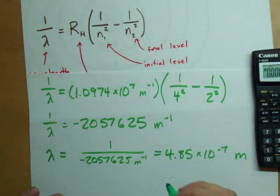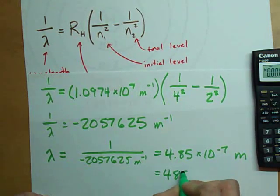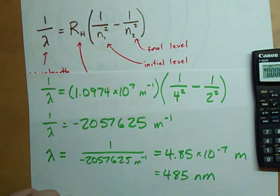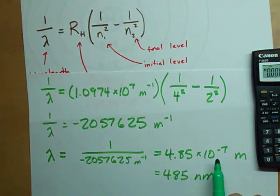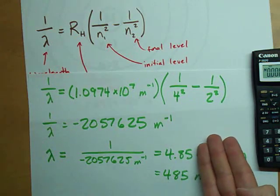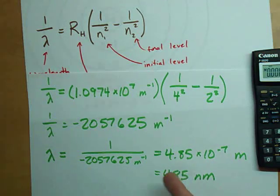This is 485 nanometers. I know that because I know that in these kind of questions I'm going to get 10 to the minus 7 a lot. And when I have 10 to the minus 7, all I have to do is convert that to nano if I multiply this by 100.